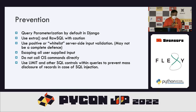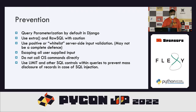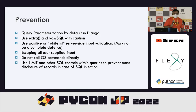Additional injection prevention measures include: use positive or whitelisting server-side input validation; escape all user-supplied input; do not call operating system commands directly through user interfaces; and use SQL controls like LIMIT with queries to prevent mass disclosure of records in case of SQL injection — for example, limiting results to 1000 records.